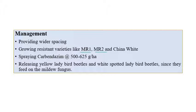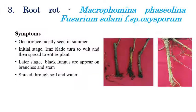Coming to management aspects, providing wider spacing is recommended, along with growing resistant varieties like MR1, MR2, and China White. Spraying Carbendazim at the rate of 500 to 625 grams per hectare is also advised. Releasing the yellow ladybird beetle and the white spotted ladybird beetle, which act as predators and feed on the mildew on the leaves, can also help.